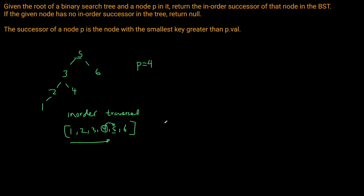This naive solution achieves O(n) runtime, which doesn't seem bad, but because we need an array to store the values we also have O(n) space complexity. We can actually bring this down to O(1) space if we're a bit more clever and figure out how to do this in place without needing to parse the entirety of the BST first.